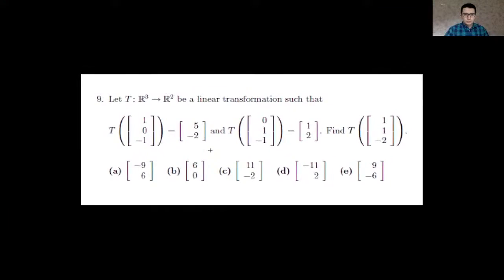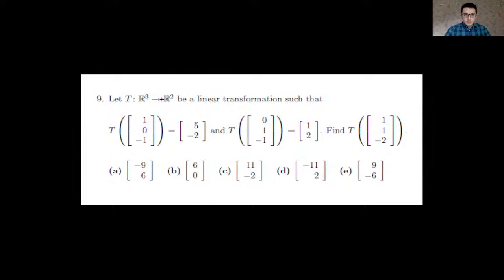Let T from the real domain with three coordinates be the linear transformation to a two-vector coordinate system. So here we have three and two, indicating that we're converting a three-component vector to a two-component vector in some domain.